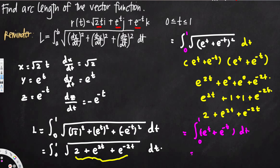This is easy to integrate. The integral of e^t is e^t. For e^(−t), we divide by the derivative of the exponent, which is −1, giving −e^(−t). So the result is e^t minus e^(−t), evaluated from 0 to 1.